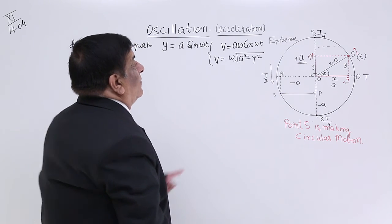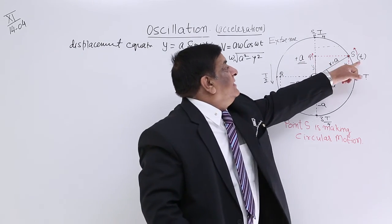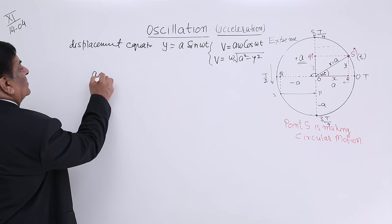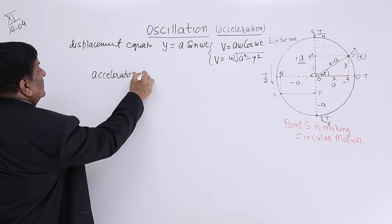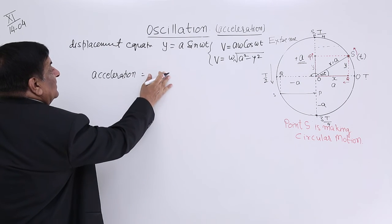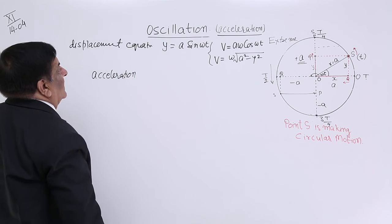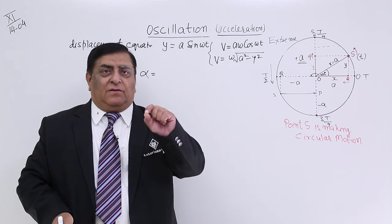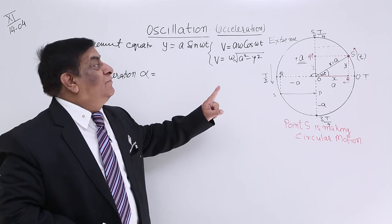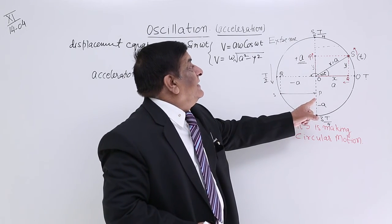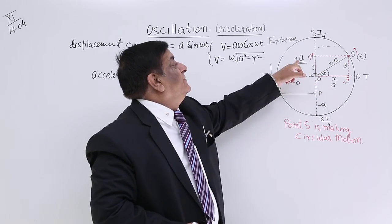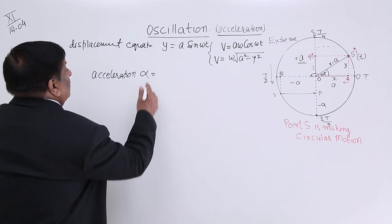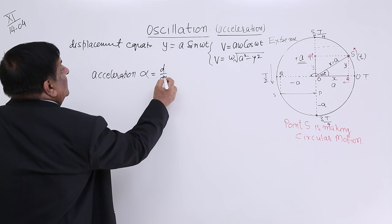Now we will find what is the acceleration of point P when the time is t and the displacement is y. This will be known as the acceleration equation. We will use the symbol alpha (α) for acceleration, because 'a' has been reserved for amplitude in this motion.